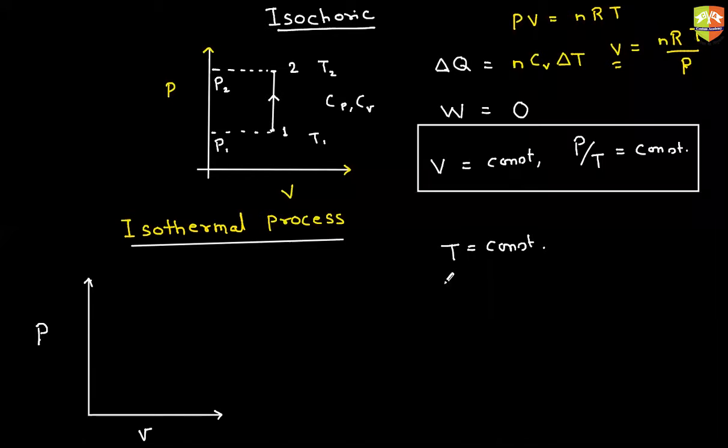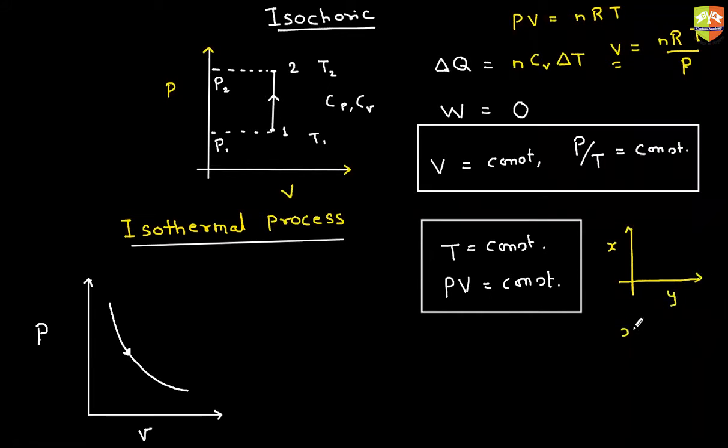T is constant. And P into V is constant because PV is equal to NRT. So if T is constant, P into V is also constant. If pressure into volume is a constant, the PV graph will look like this. It will be a curve. It is basically a formula of rectangular hyperbola. If this is X axis, this is Y axis, the equation X into Y is constant. This graph will be a rectangular hyperbola like this.